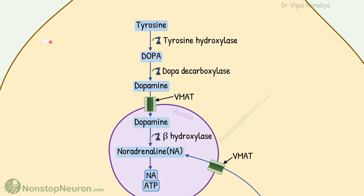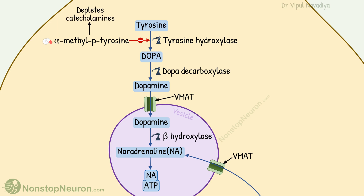First, we have alpha-methyl-P-tyrosine. It inhibits the enzyme tyrosine hydroxylase. Tyrosine hydroxylase is the rate-limiting enzyme in the entire process, and its inhibition depletes catecholamines, so the transmission is impaired.